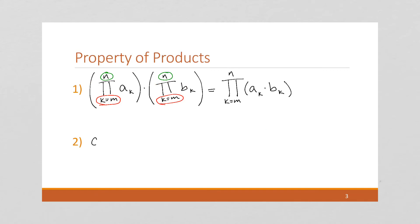So, if I have a constant times a product, can I just pull that constant in?